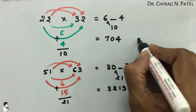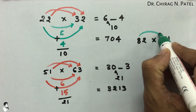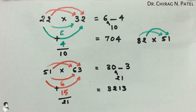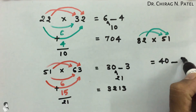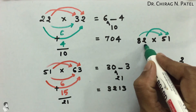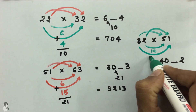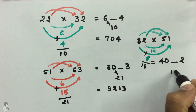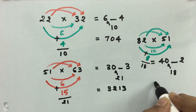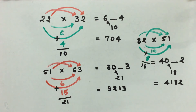One more example: 82 multiplied by 51. Multiply 8 into 5, which is 40 — make some space — and 2 into 1 is 2. For the middle: 2 into 5 is 10 and 8 into 1 is 8; their sum is 18. Write 18 here and carry the 1 to the 0, giving a final answer of 4182. This is the way to multiply two-digit numbers up to 100 in a very easy and fast way.